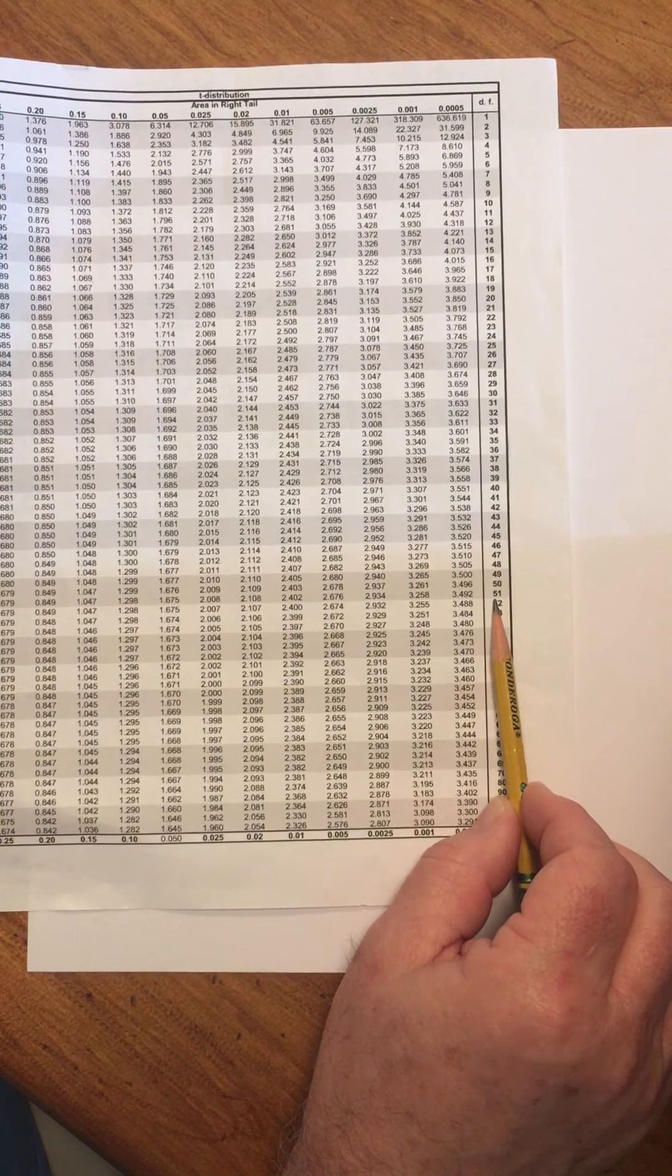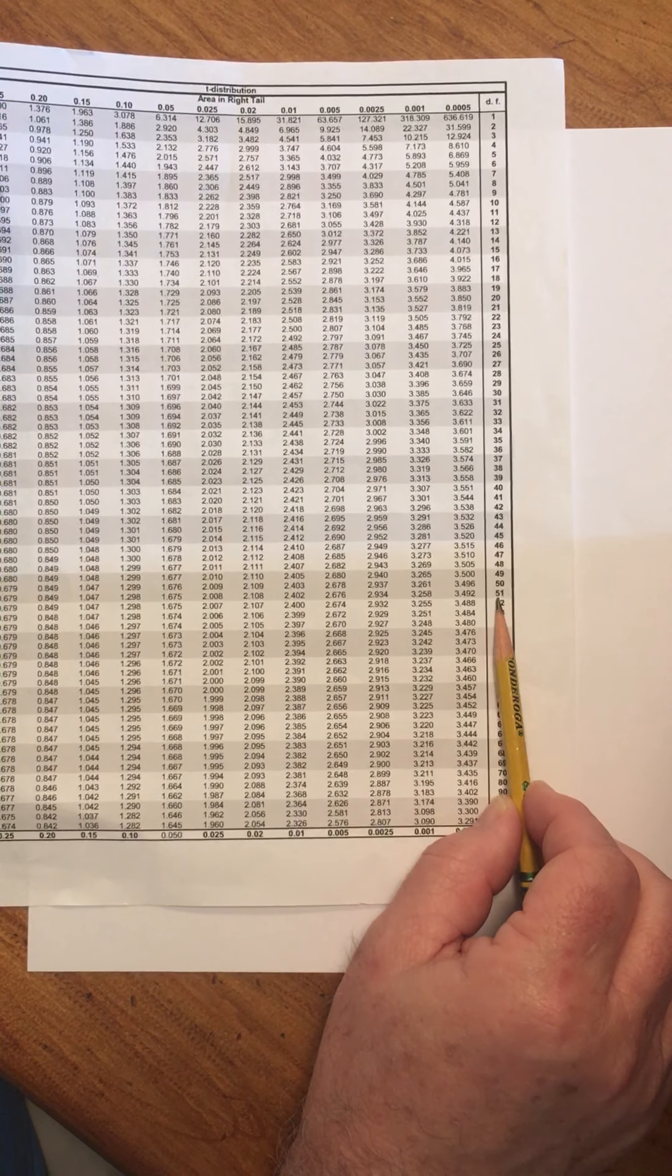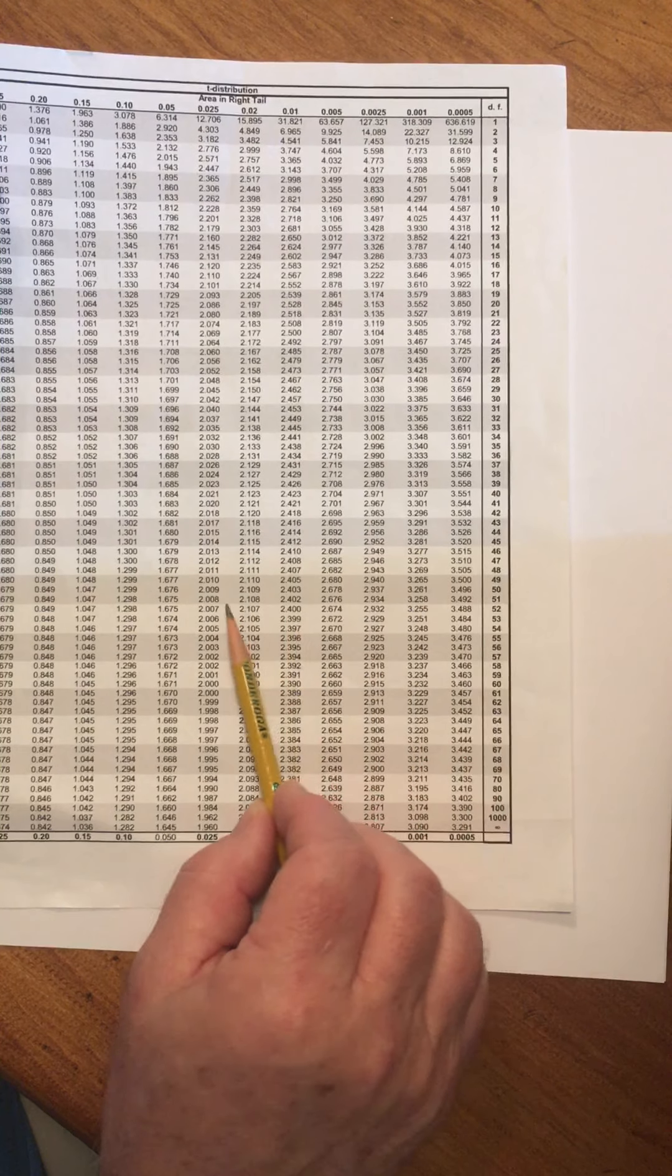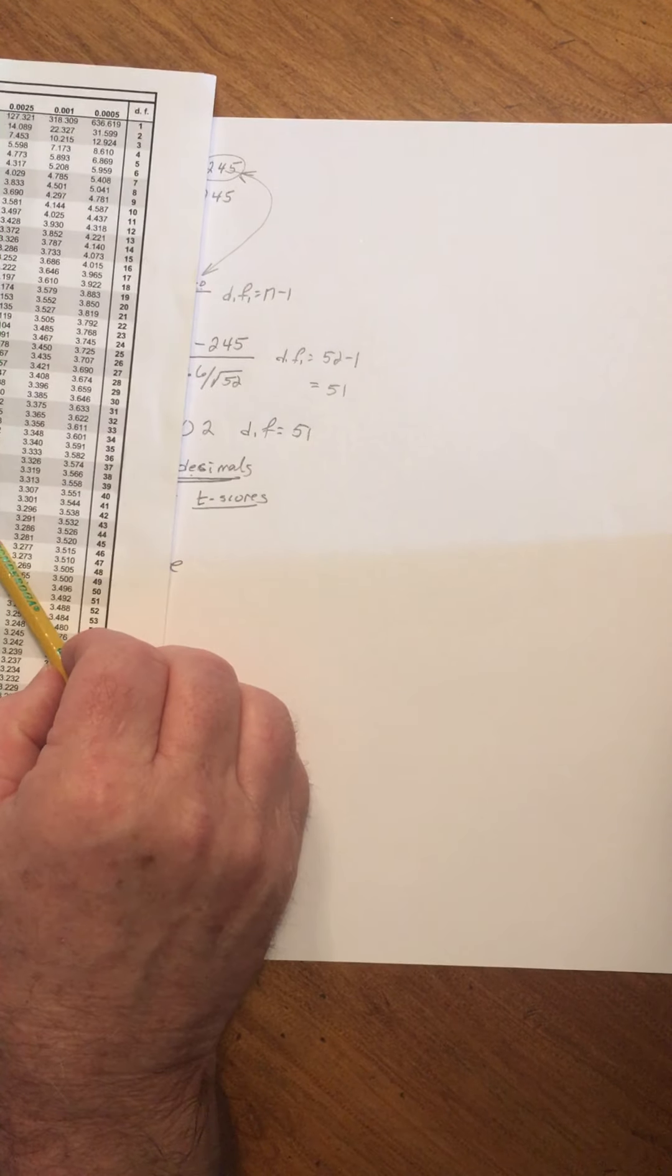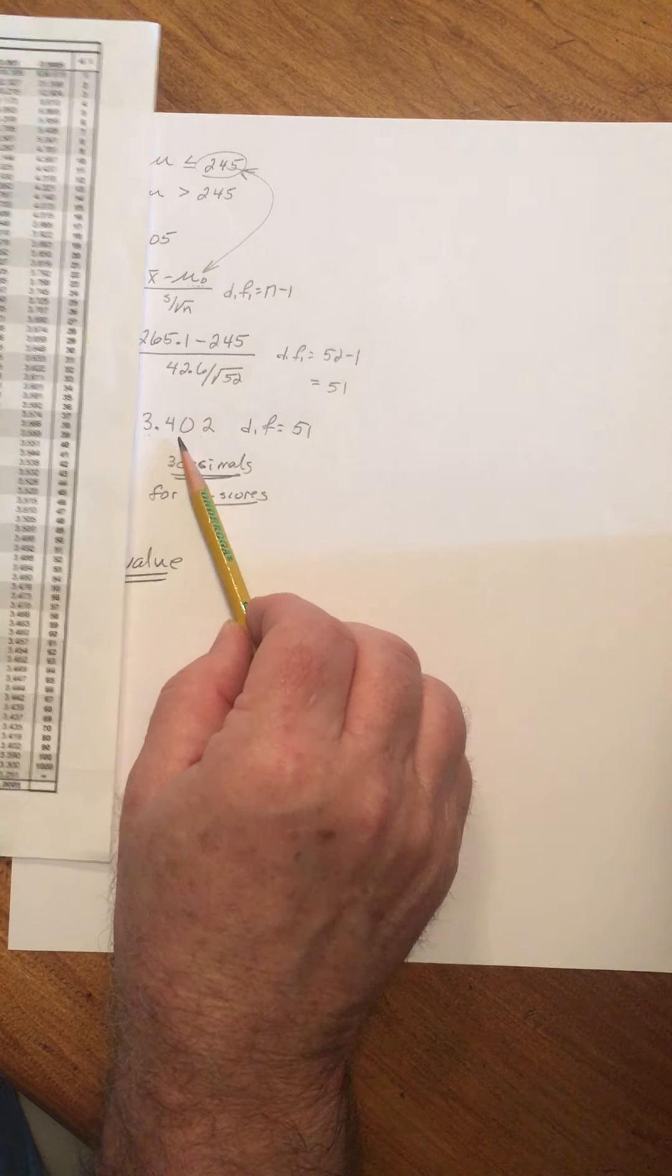We're in 51 degrees of freedom and 3.402. The procedure is this: we find the two values in the 51 degrees of freedom row. If this number actually is in here, so much the better. It almost never will be.